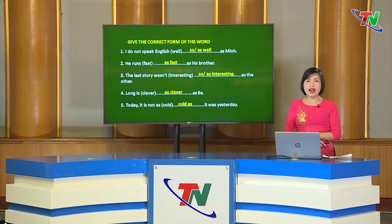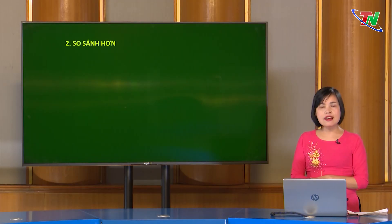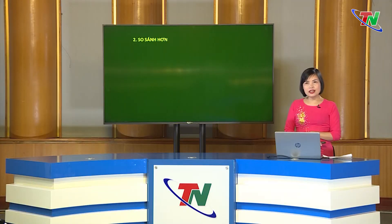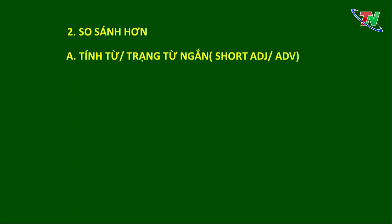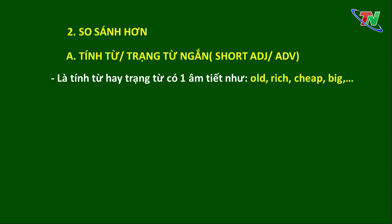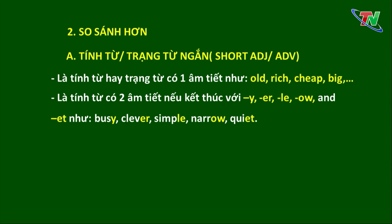Bây giờ cô và các em sẽ sang phần thứ 2: so sánh hơn của tính từ và trạng từ. Khi muốn so sánh giữa 2 người hoặc 2 sự việc, chúng ta sẽ sử dụng so sánh hơn. Trong so sánh hơn, chúng ta sẽ sử dụng tính từ ngắn, trạng từ ngắn hoặc tính từ dài. Tính từ và trạng từ ngắn là những từ có một âm tiết, ví dụ như: old, rich, cheap, big. Hoặc là những tính từ có 2 âm tiết nếu như kết thúc với 'y' dài.